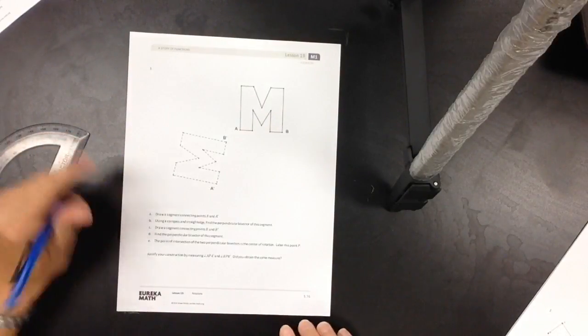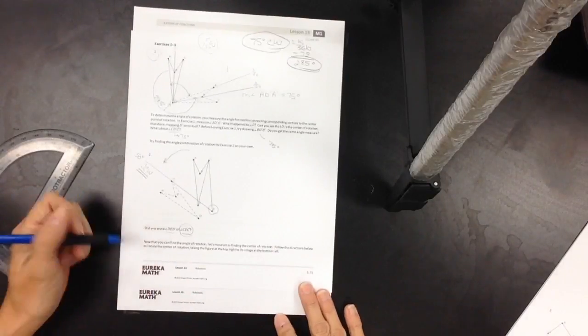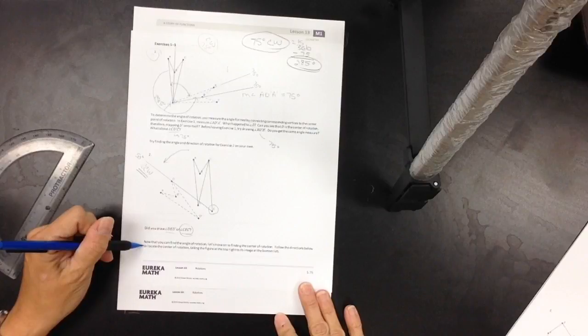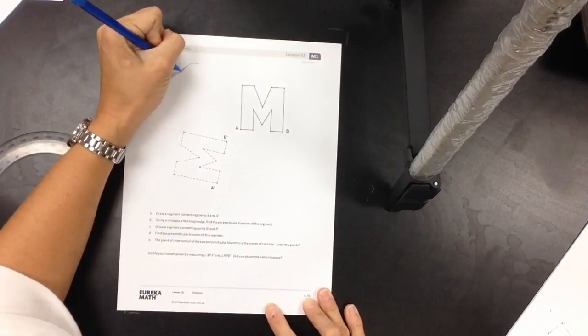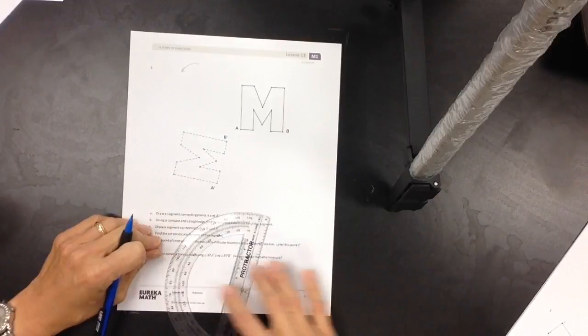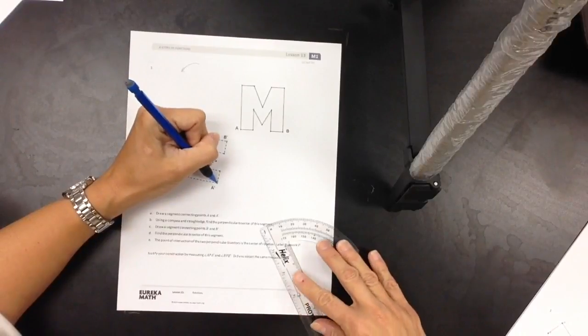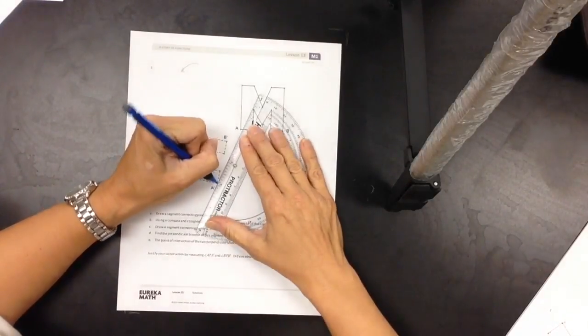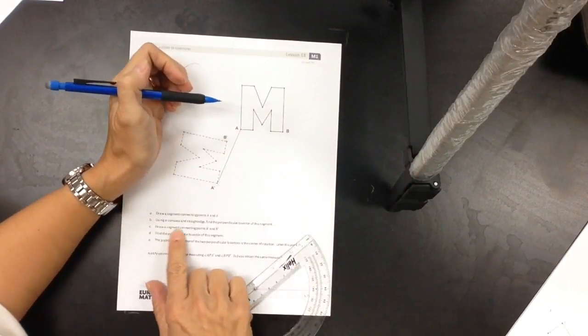All right, number three. It says right here, now that you can find the angle of rotation, let's move on to finding the center of rotation. Follow the directions below to locate the center of rotation, taking the figure at the top right to its image at the bottom left. So we are going in that direction, right? We're going to find the center of rotation. Draw a segment connecting points A and A prime. So A and A prime.